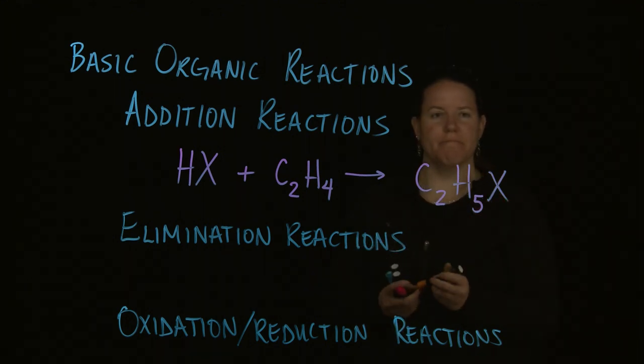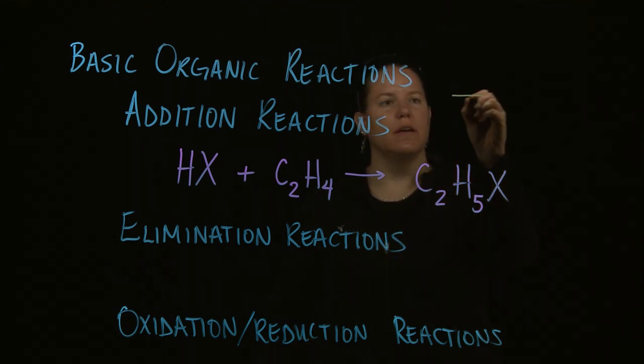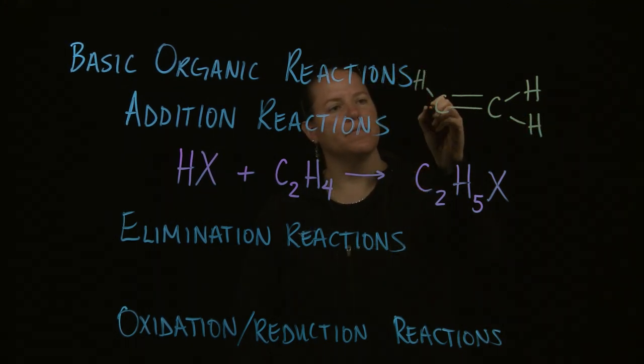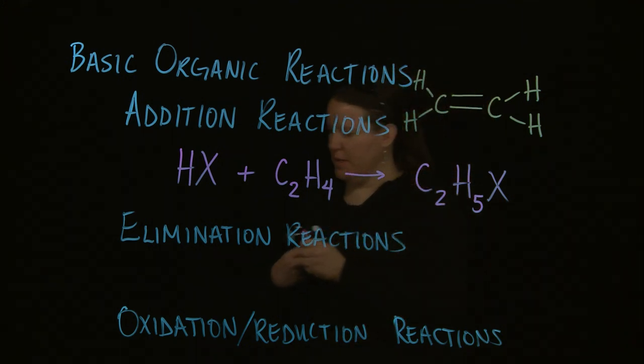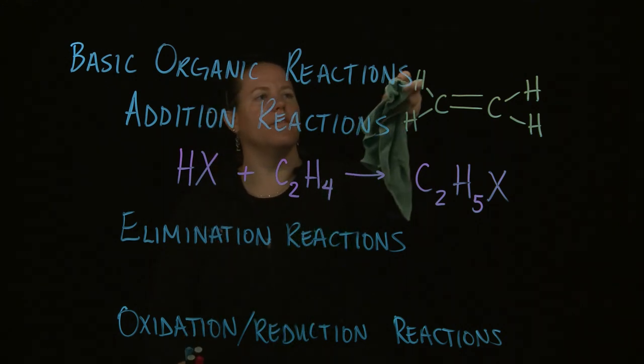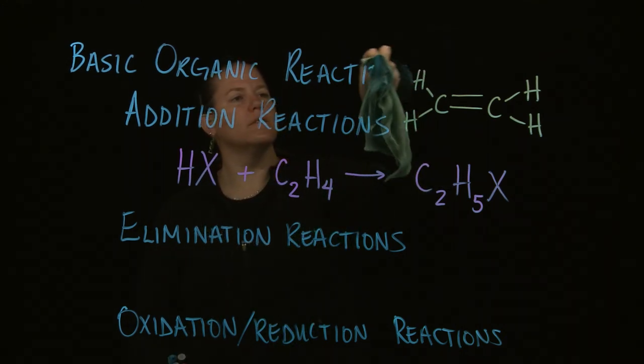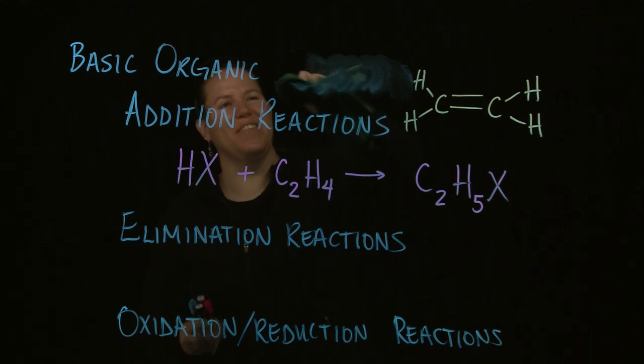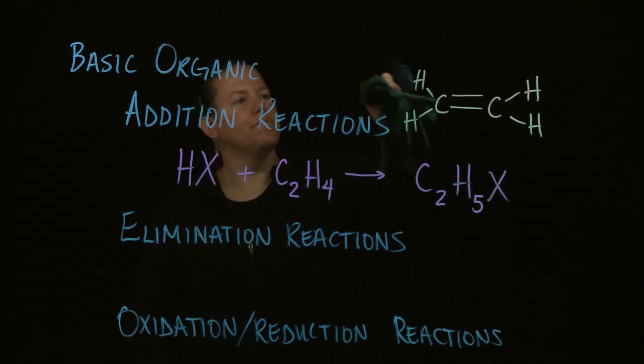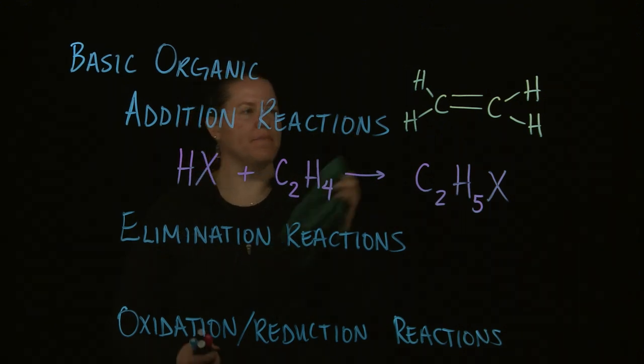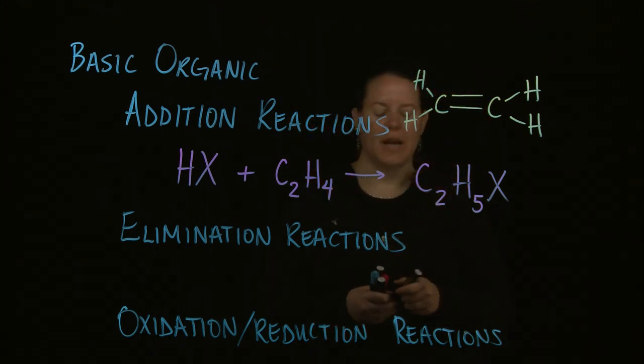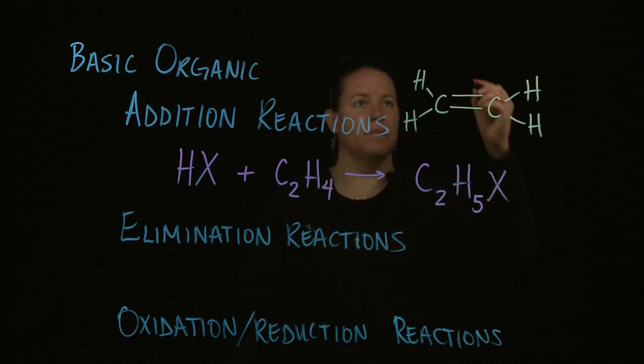So you add something, and what happens is you get that something added in. So we could essentially say that it becomes C2H5X. In terms of what that actually looks like, it's a little more complex. In addition reactions, you're always going to see a multiple bond. In this case, we have a multiple bond of a double bond. There's my multiple bond.